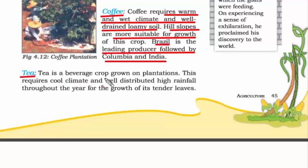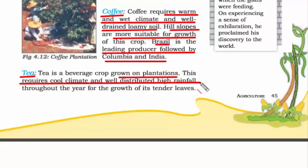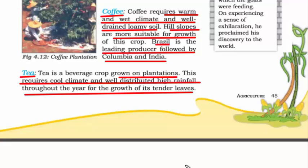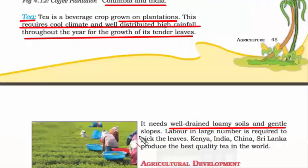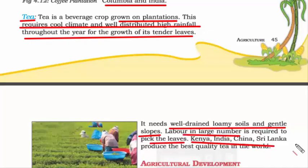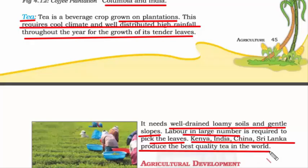Tea is a beverage crop grown on plantations. It requires cool climate and well-distributed high rainfall throughout the year for the growth of its leaves, as well as well-drained loamy soil and gentle slopes. That's why tea plantations in India are found on the slopes of Darjeeling. Extensive labor is needed to pick the tea leaves. Kenya, India, China, and Sri Lanka produce the best quality tea in the world.